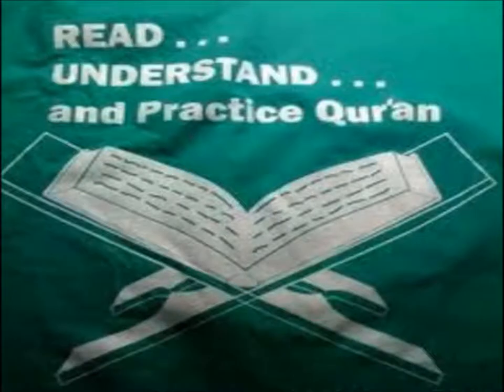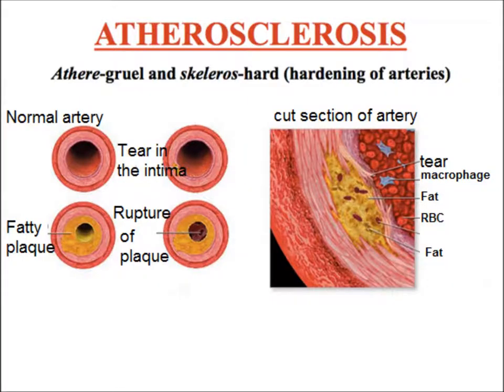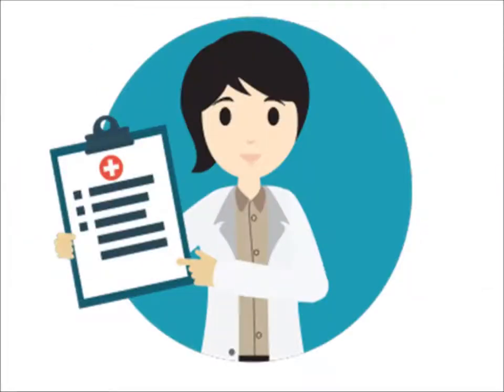Back to atherosclerosis — it is the hardening of the arteries. Normally arteries have a round lumen, but sometimes there is a tear in the intima which leads to deposition of fat. Rupture of the block leads to occlusion of the artery.